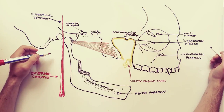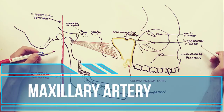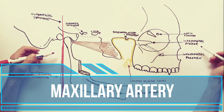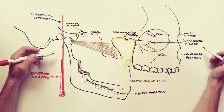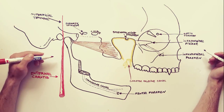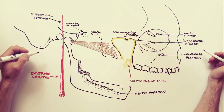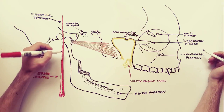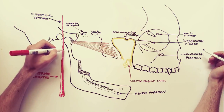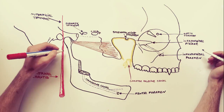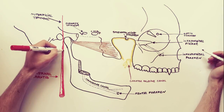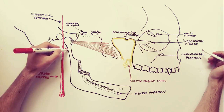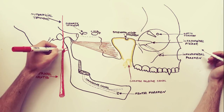Today we will discuss the maxillary artery and its branches. I have indicated important features, like the mandible, from which I have removed the coronary process. Inside the body of the mandible we see the presence of the mandibular canal, which has an anterior opening — the mental foramen. Highlighted in yellow, I have indicated the boundaries of the pterygopalatine fossa. Using brown, I have indicated the lateral pterygoid muscle, presenting the infratemporal fossa.